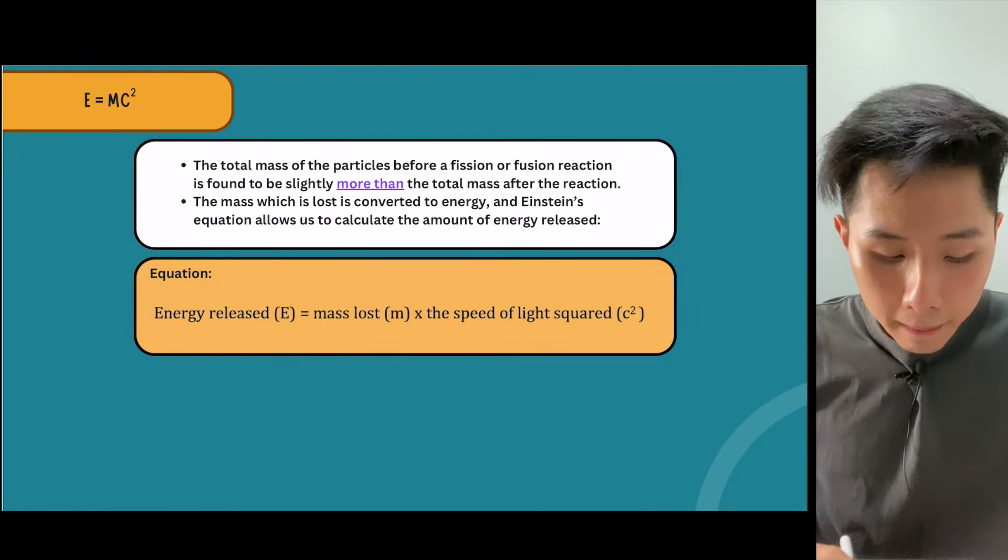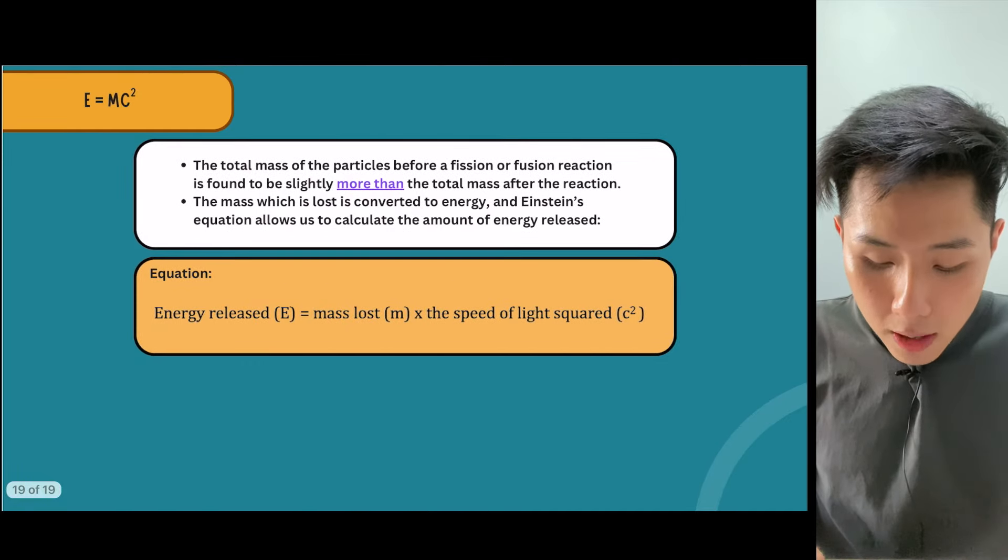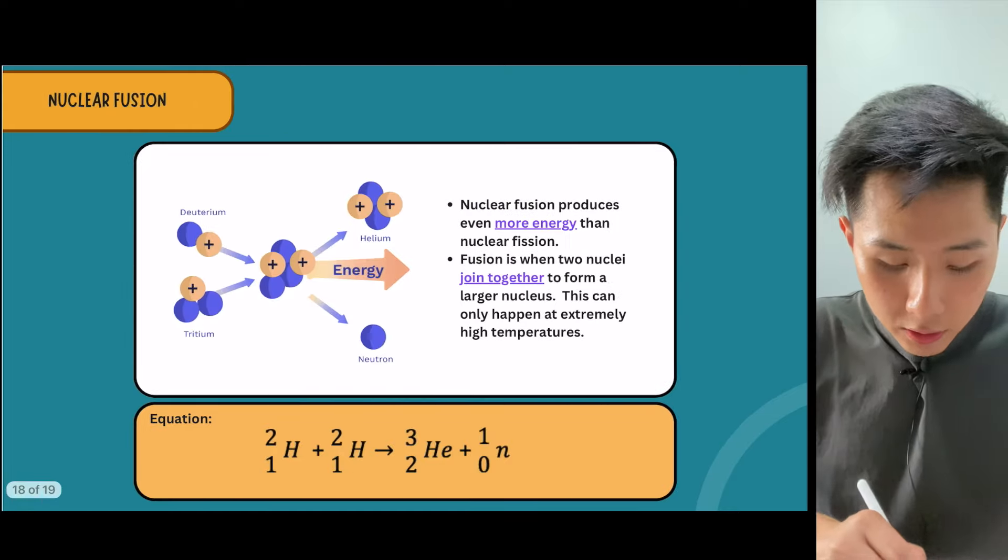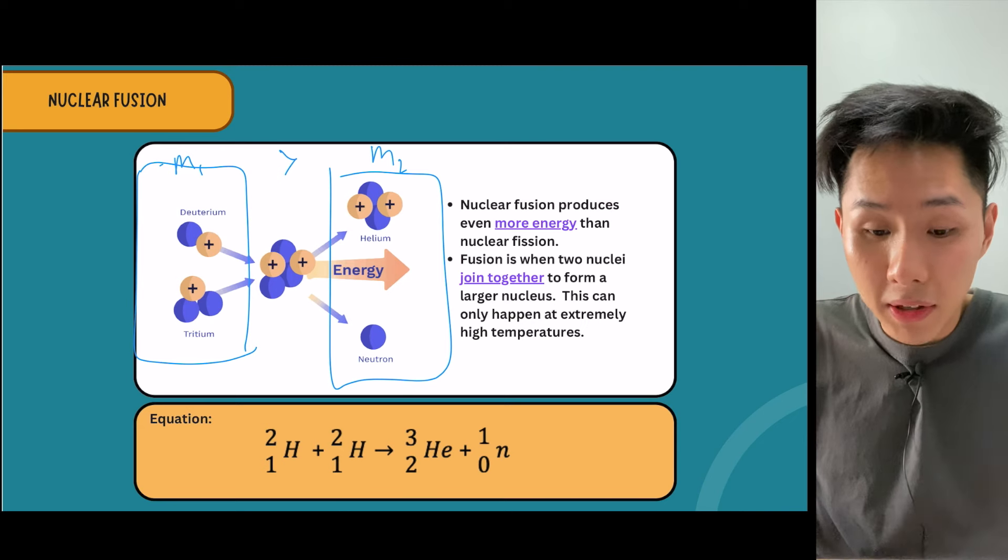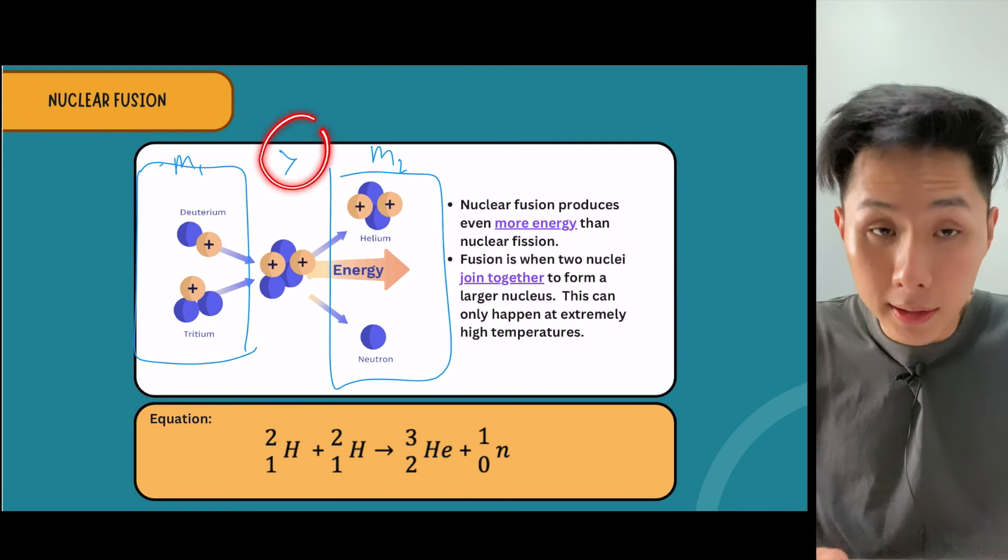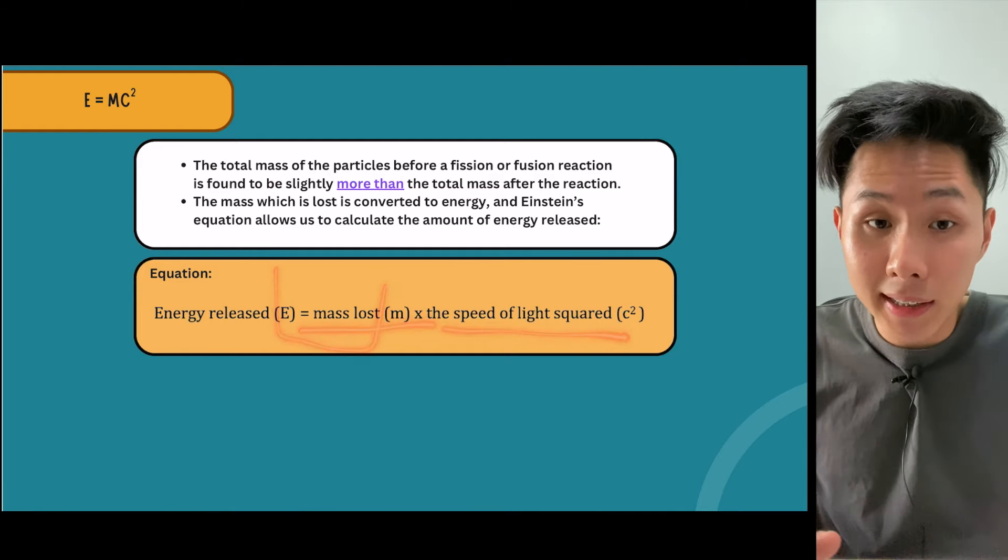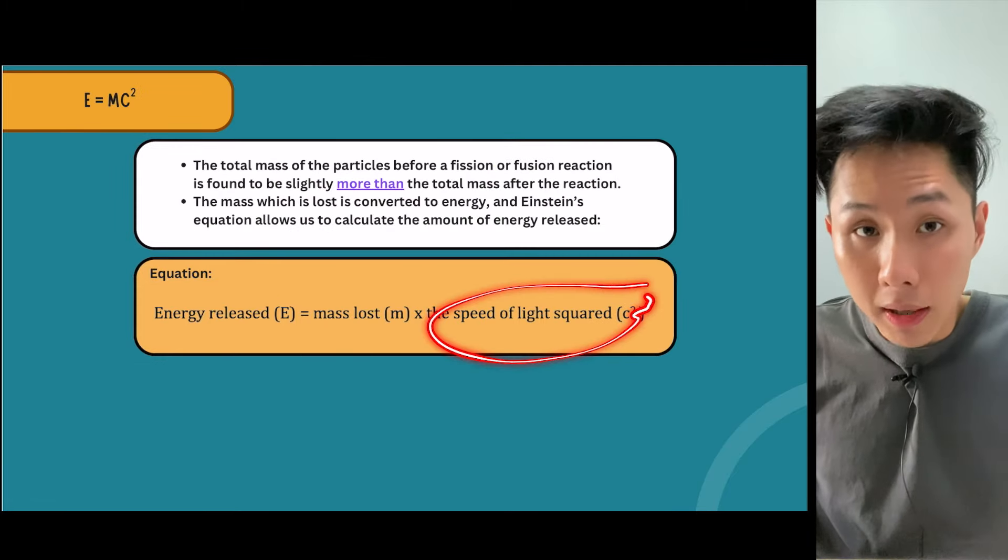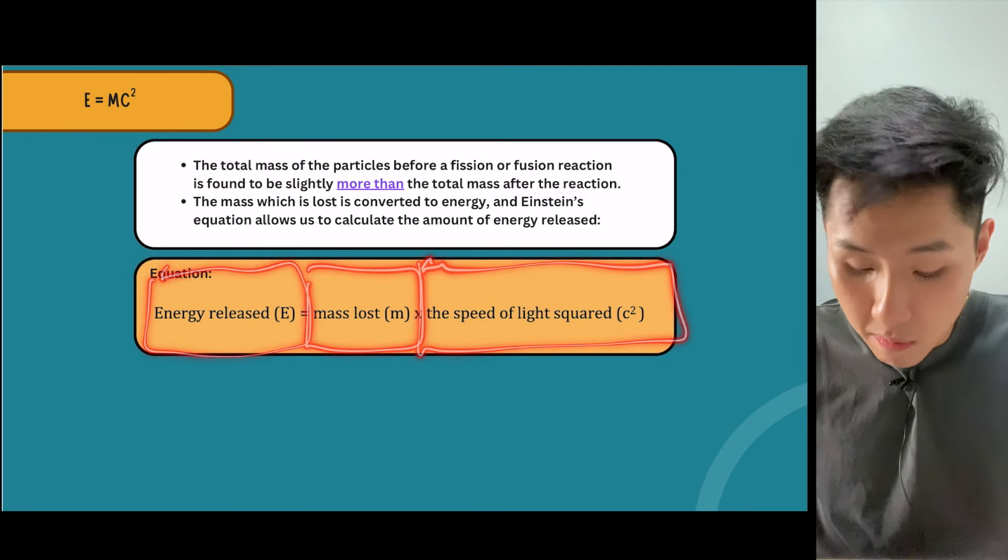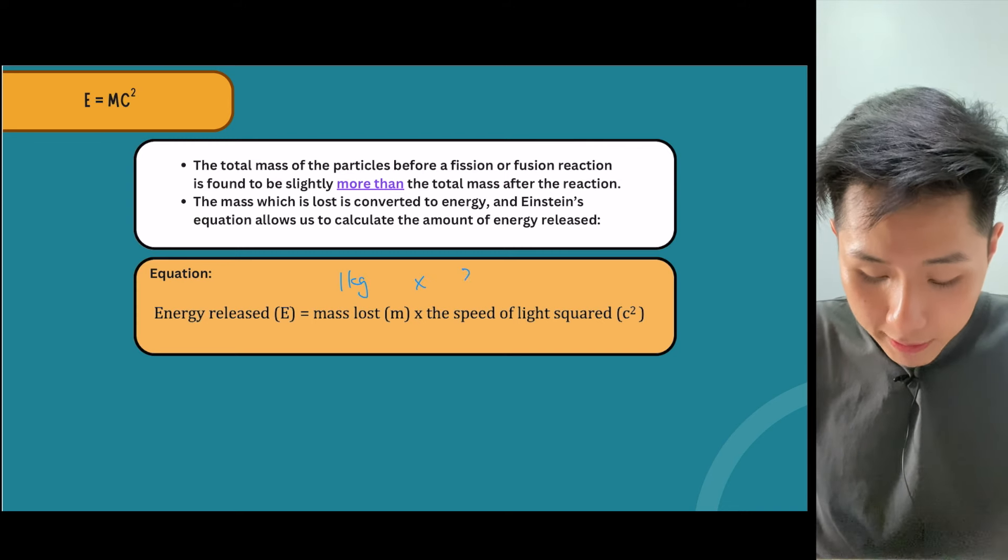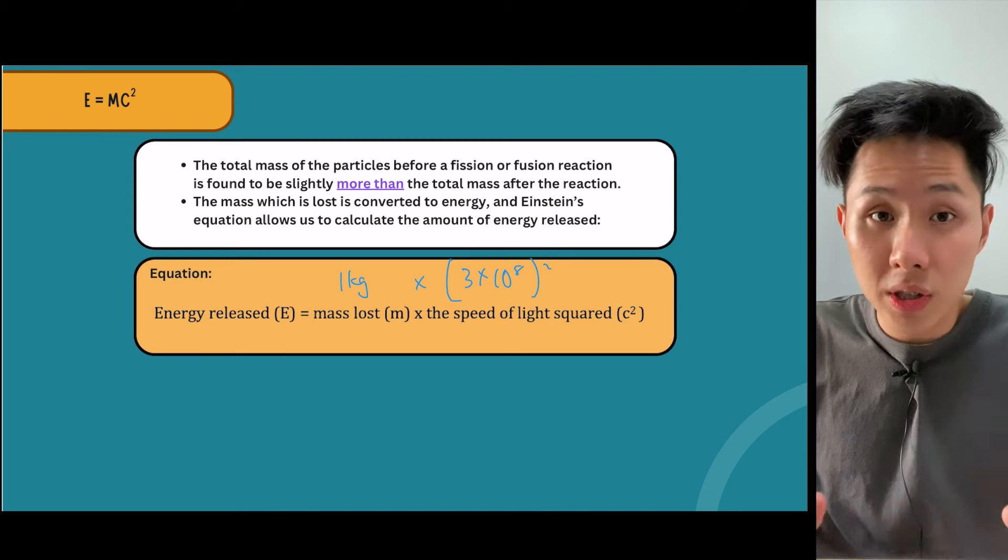What scientists found is that for both nuclear fission and fusion, the total mass of particles before a reaction is slightly more than after the reaction. Where does the lost mass go? That leads us to the famous Einstein formula E equals mc squared. M stands for the mass lost during the equation, c stands for the speed of light squared. If you use the mass loss multiplied by the speed of light squared, you get the energy released, which can be super big. Imagine one kg lost multiplied by 3 times 10 to the power of 8 squared - that is a huge amount of energy.